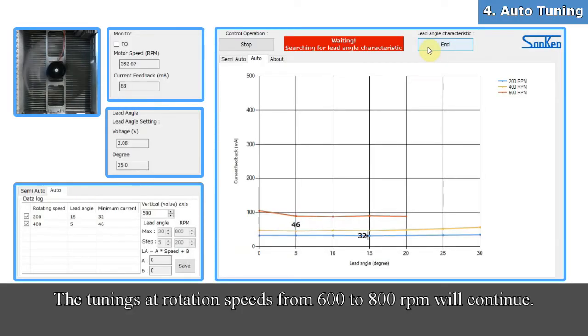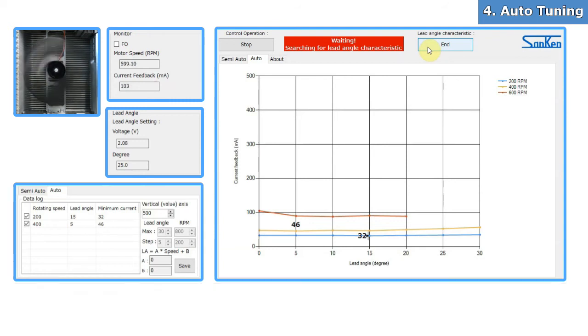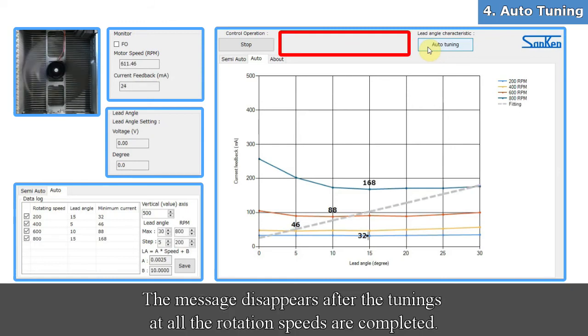The tunings at rotation speeds from 600 to 800 RPM will continue. The message disappears after the tunings at all the rotation speeds are completed.